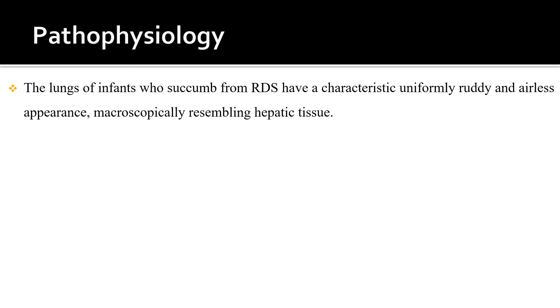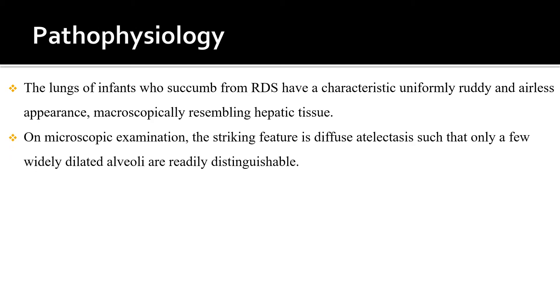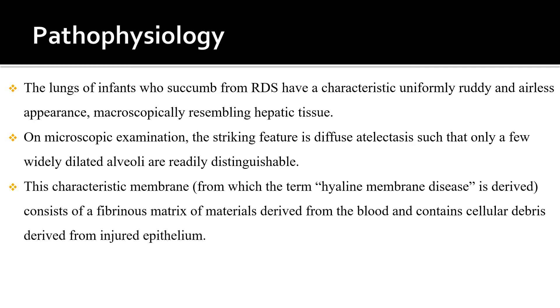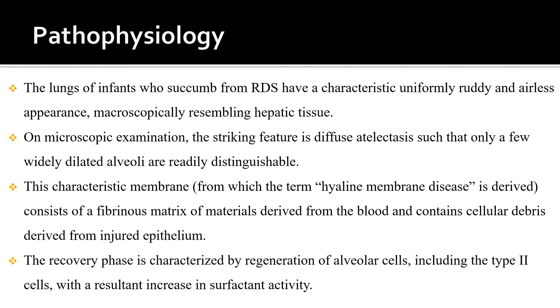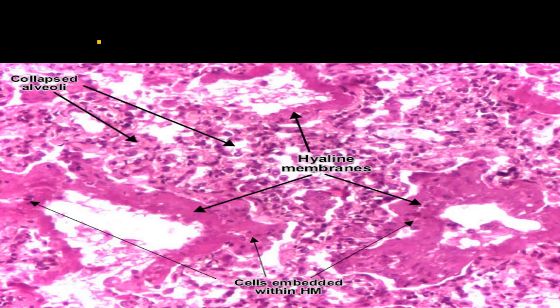Regarding pathophysiology, the lungs of infants who die from RDS have a characteristic uniformly ruddy and airless appearance microscopically resembling hepatic tissue. On microscopic examination, the striking feature is diffuse atelectasis with only a few widely dilated alveoli. The characteristic hyaline membrane, from which hyaline membrane disease is derived, consists of a fibrinous matrix of materials derived from the blood and cellular debris from injured epithelium. The recovery phase is characterized by regeneration of alveolar cells, including type 2 cells, with a resultant increase in surfactant activity. Pathologically, there is a collapsed alveolus with hyaline membrane formation and cells embedded within the hyaline membrane.